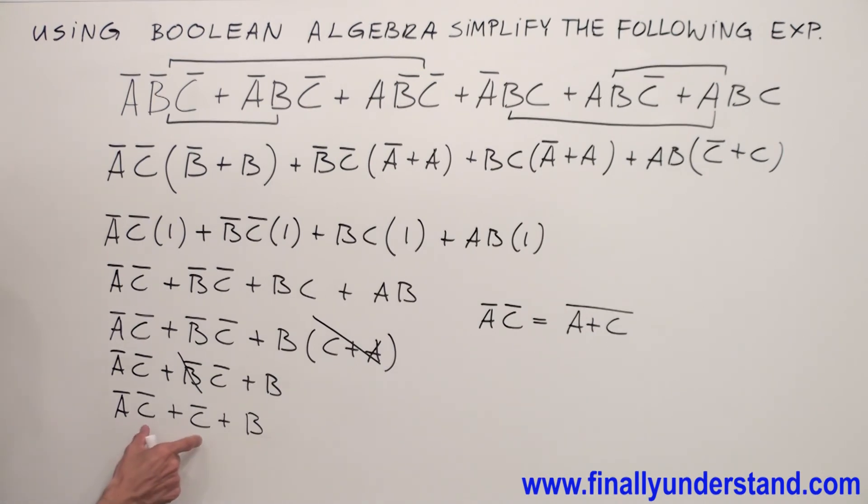Now, take a look what we have over here. I have C̅. I can factorize C̅. I'm going to have C̅ and A̅ or 1 or B.